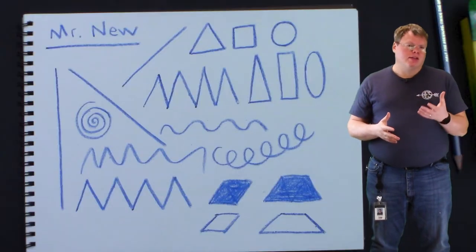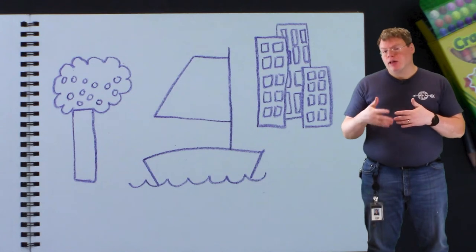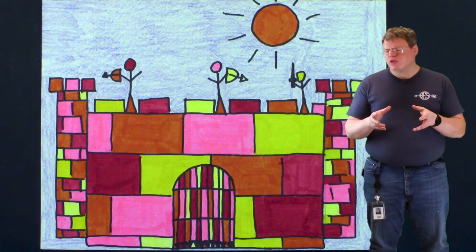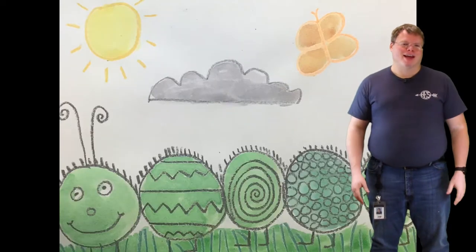Welcome to Mr. New's art class. It's wonderful to see your smiling faces. Over the last two lessons we've learned about basic simple lines and shapes and how to put them together in patterns and how to make those patterns a little bit more interesting by changing things up. Today we're going to keep talking about those same concepts of lines, shapes, and patterns, and we're going to make a beautiful caterpillar today.